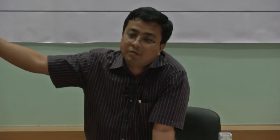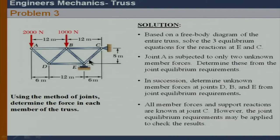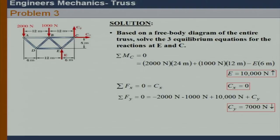In the method of joints, we always try to start from a joint where two member forces are unknown. For a simple truss supported by three reactions, it is always possible to find reactions at the beginning. Starting from joint A with two unknowns, we can proceed joint by joint — through joints D, B, and E — solving for all member forces.